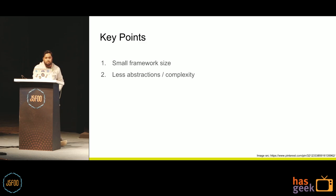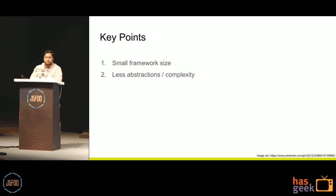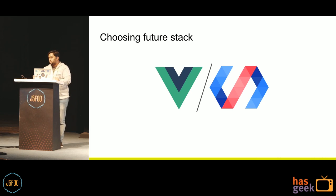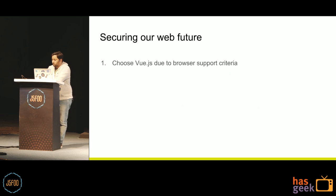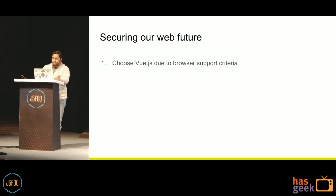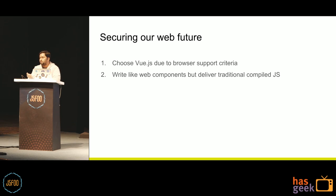So those were the requirements. The key points we were looking for were a small framework size with less abstraction and complexity. We had seen other frameworks and liked the philosophies of Vue and Polymer. But this time we had to choose Vue because of the browser support constraint. This is how we are going forward to secure our web future — we write our code in Vue.js and develop it in a web component style, using Vue.js single file components.